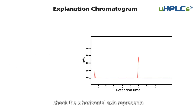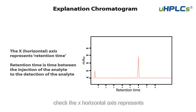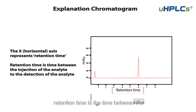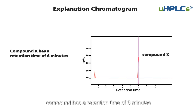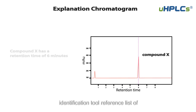Now let's check the x horizontal axis, which represents retention time. Retention time is the time between the injection of the analyte to the detection of the analyte. In this example, a compound has a retention time of 6 minutes. Retention time can also be used as an identification tool.